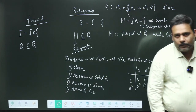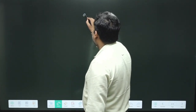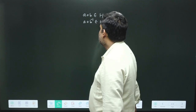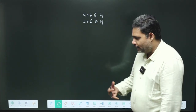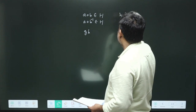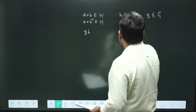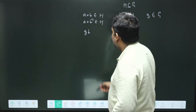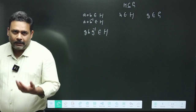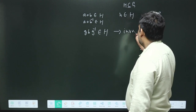Mainly we have to talk about the non-trivial thing. When we go for the non-trivial thing, we have to check some conditions. The condition is that if A operation B is an element of H, then A operation B inverse is also an element of H. We can also check that if h is an element of subgroup H and g is an element of the group G where H is a subgroup of G, then g h g inverse will also be an element of H. This is the condition for what is called an invariant group.